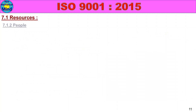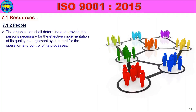7.1.2 People: The organization shall determine and provide the persons necessary for the effective implementation of its Quality Management System and for the operation and control of its processes.